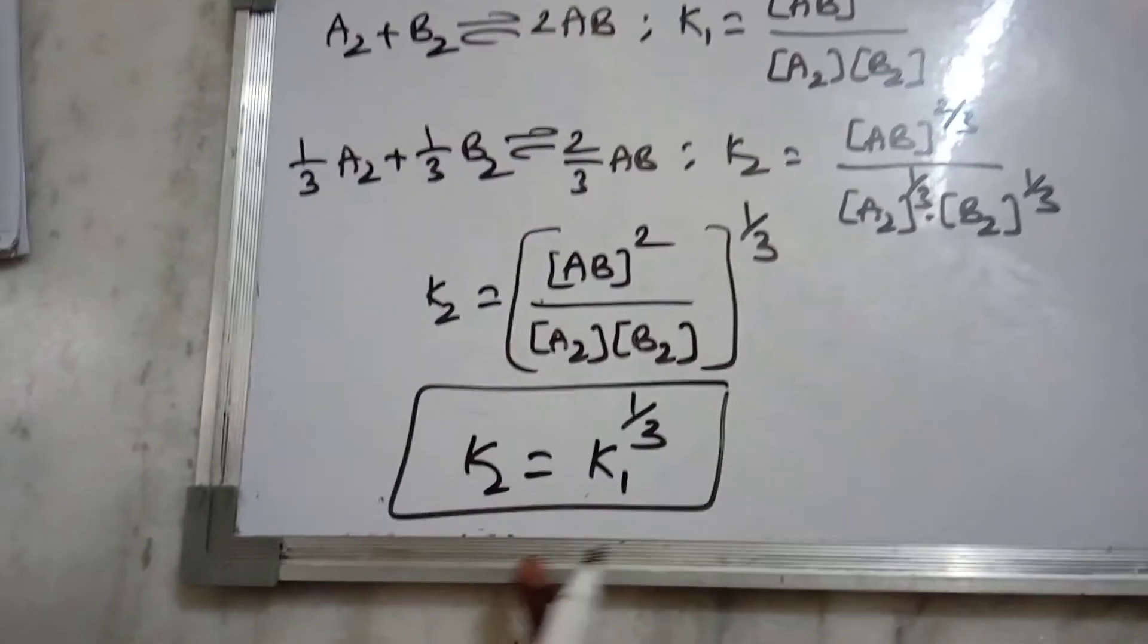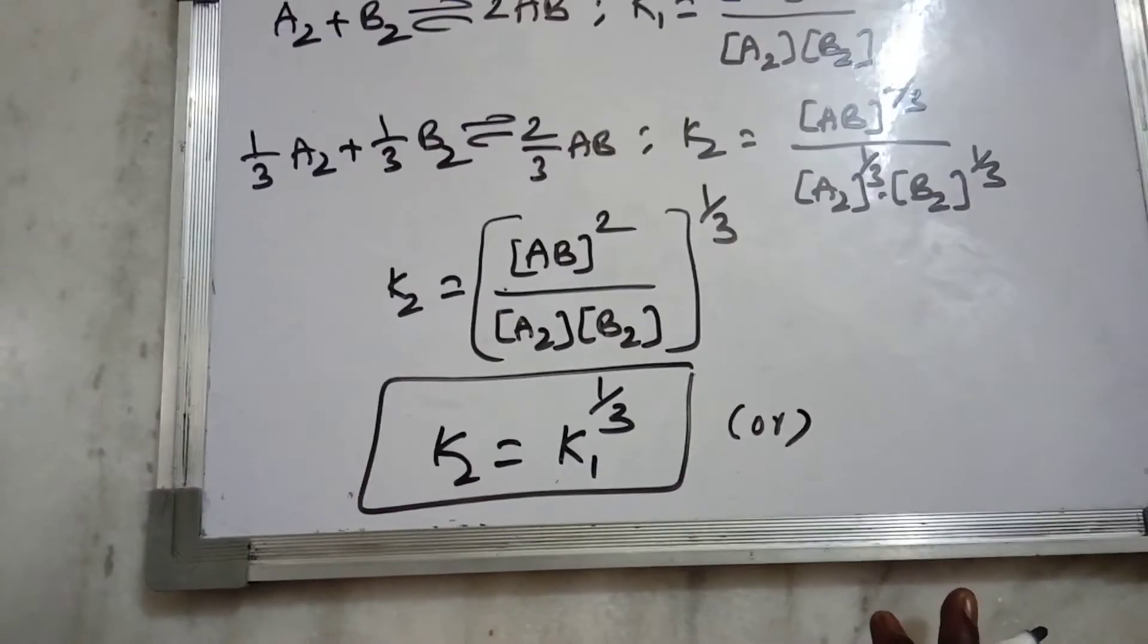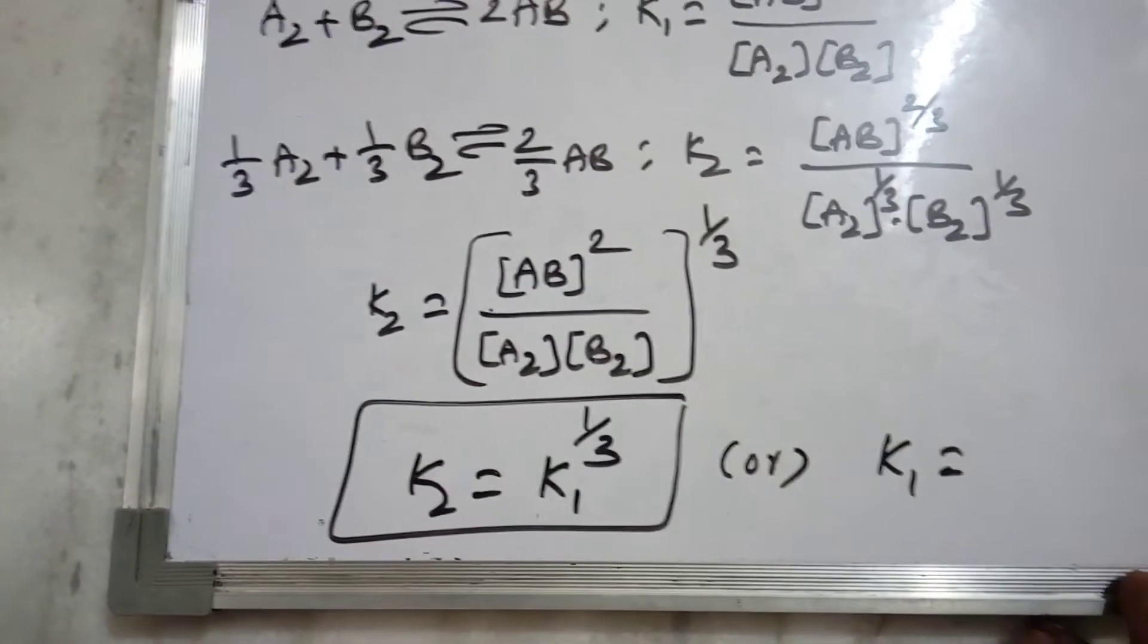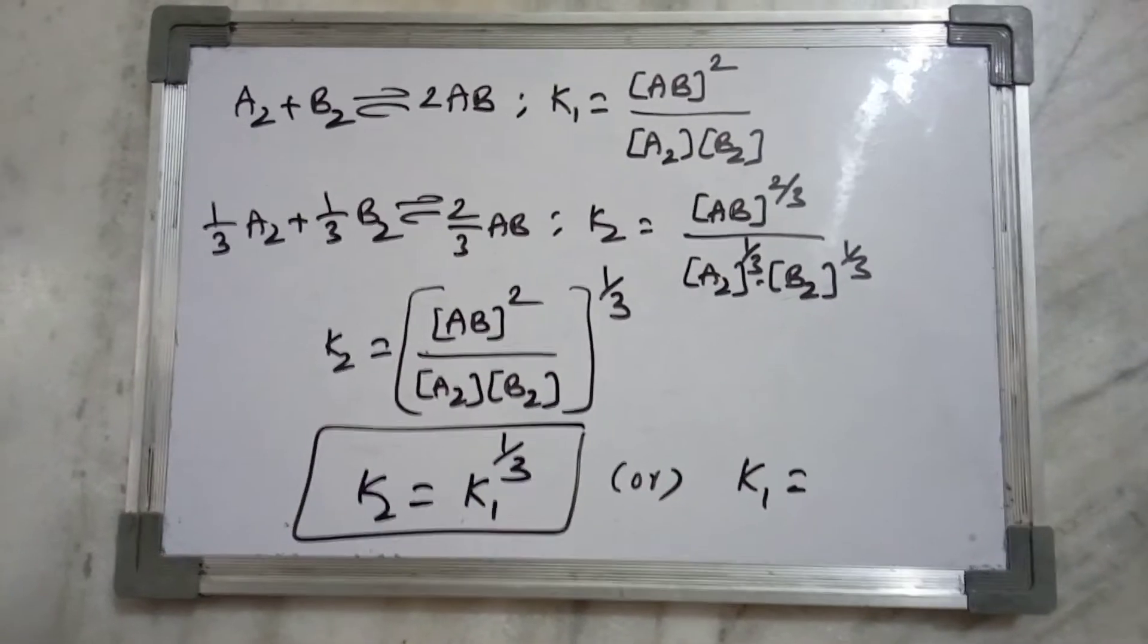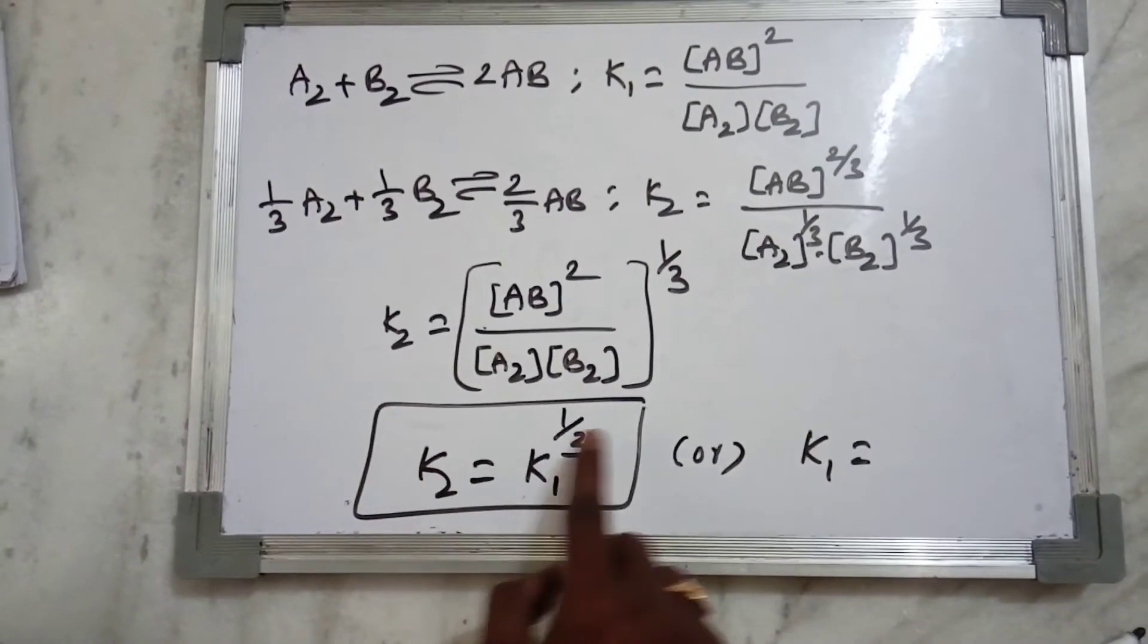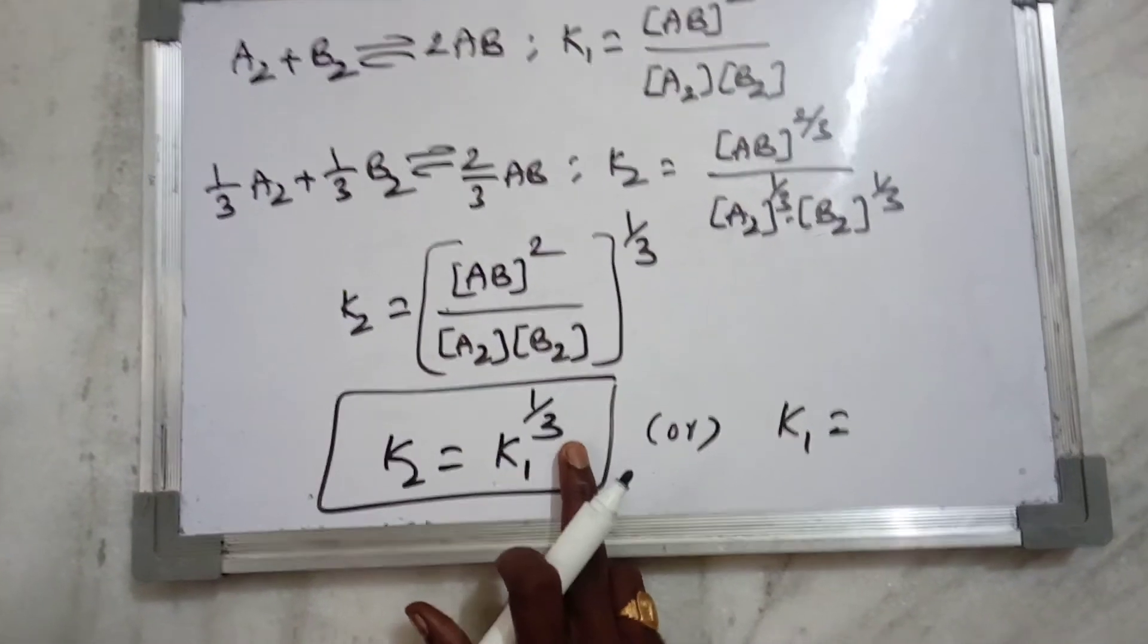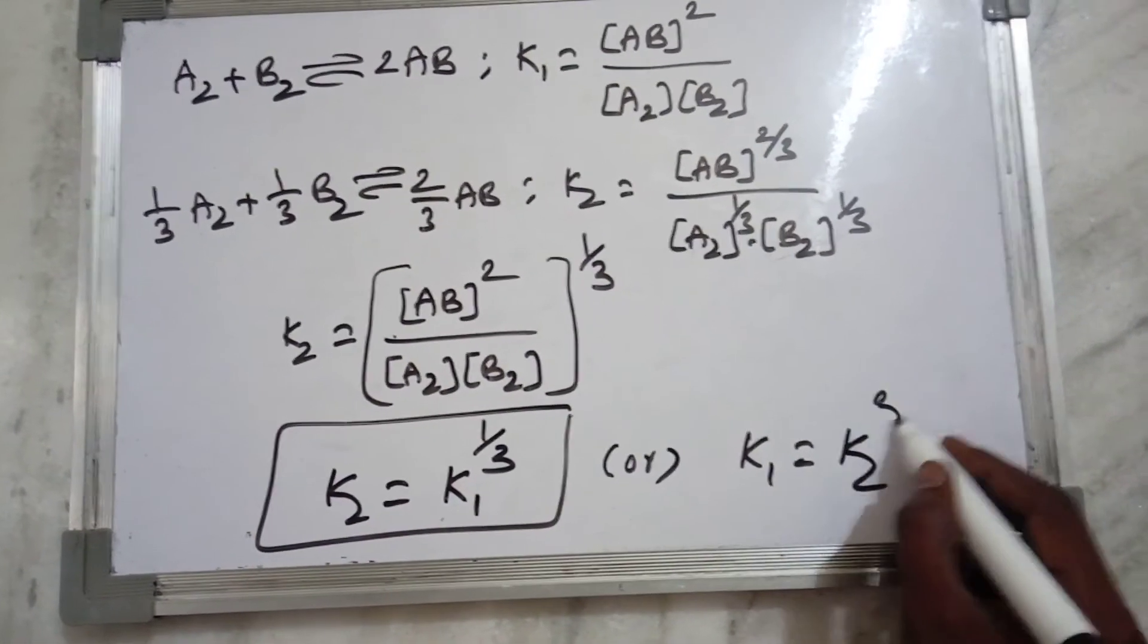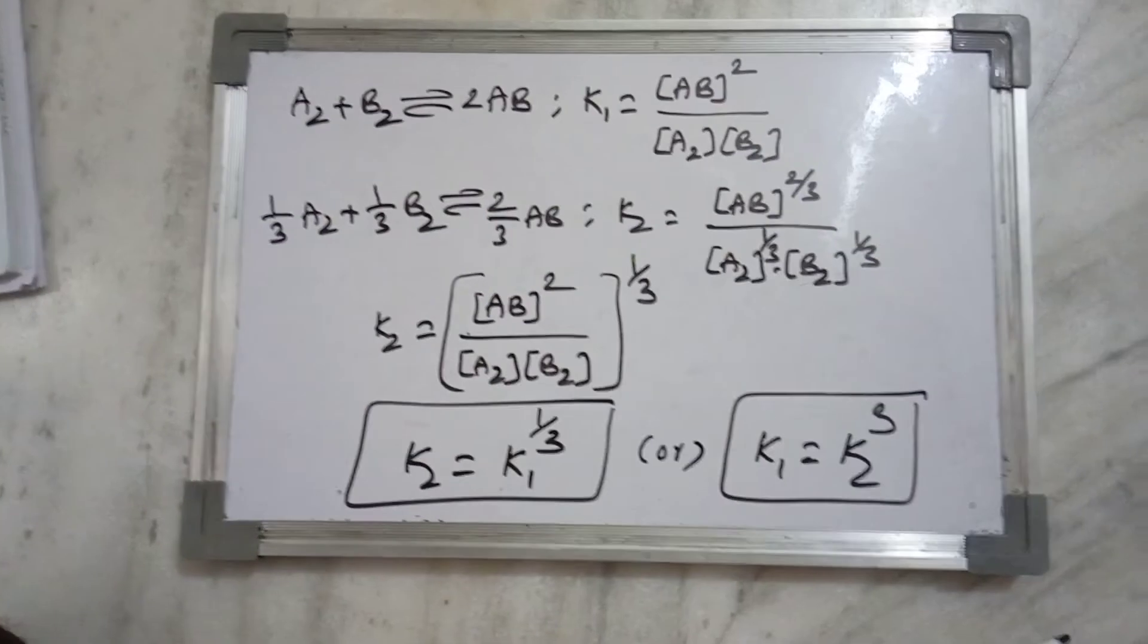One by three means the cube root. So K1 is equal to power 1 by 3. K2 power 3 equals K1, or we can write K1 is equal to K2 cube. So the answer is option A.